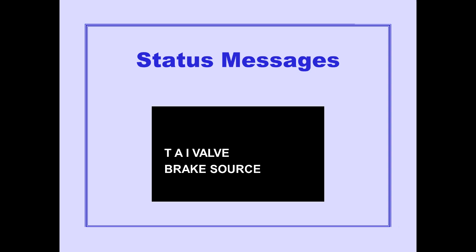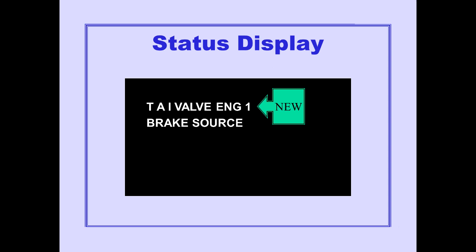White status messages appear in the lower left-hand corner of the secondary ICAST display. Status messages indicate system or equipment faults which may affect airplane dispatch. The newest status message is always displayed at the top of the status message area, and all other status messages move down.